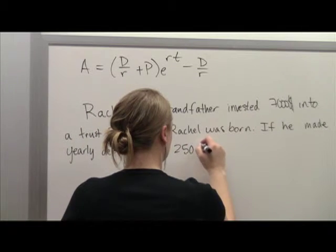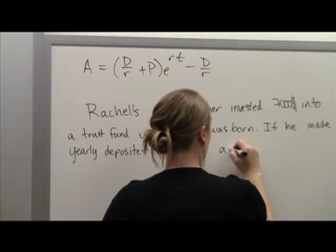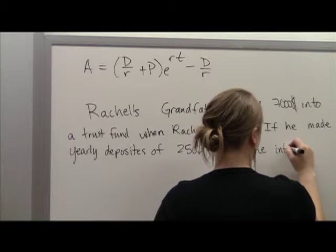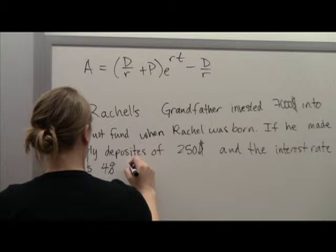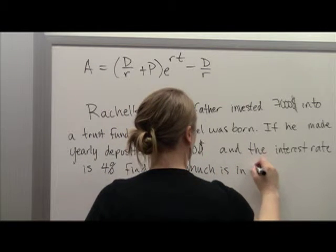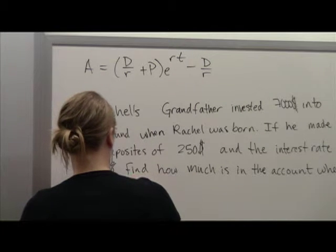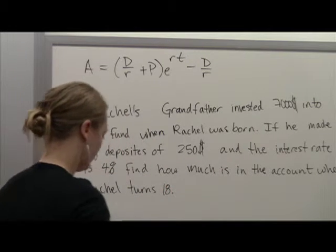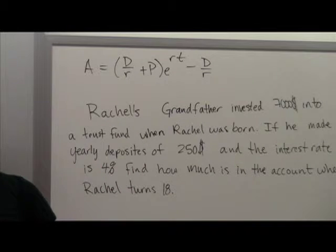Let's do something simple, $250, and the interest rate is 4%, find how much is in the account when Rachel turns 18. Rachel's grandfather invested $7,000 into a trust fund when Rachel was born. If he made yearly deposits of $250, and the interest rate is 4%, find how much is in the account when Rachel turns 18.